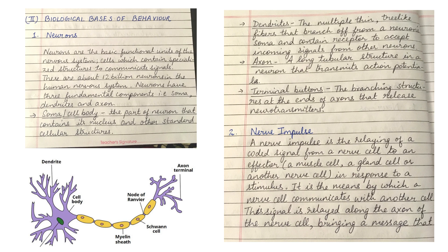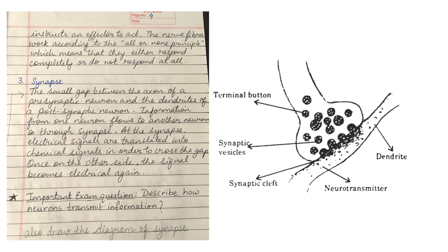A nerve impulse is the relaying of a coded signal from a nerve cell to an effector, which could be a muscle cell, a gland cell, or another nerve cell, in response to a stimulus. It is the means by which a nerve cell communicates with another cell. This signal is relayed along the axon of the nerve cell, bringing a message that instructs an effector to act.